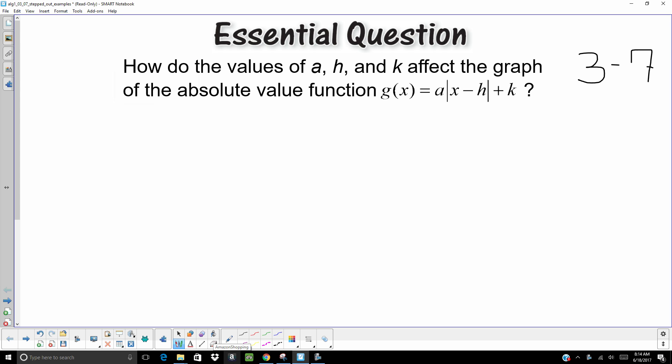Hello. Today we are doing Chapter 3, Section 7 in Algebra 1. Our essential question is, how do the values of a, h, and k affect the graph of the absolute value function g of x equals a times the absolute value of x minus h plus k.